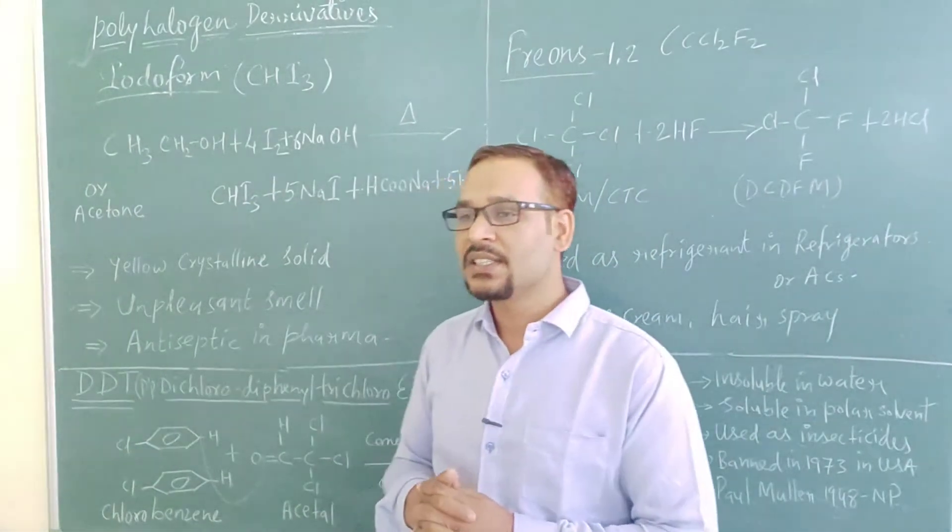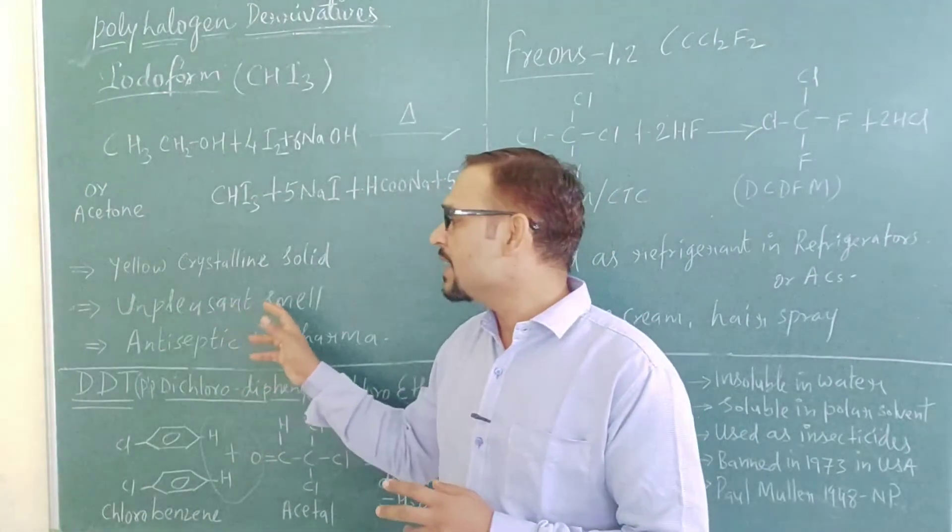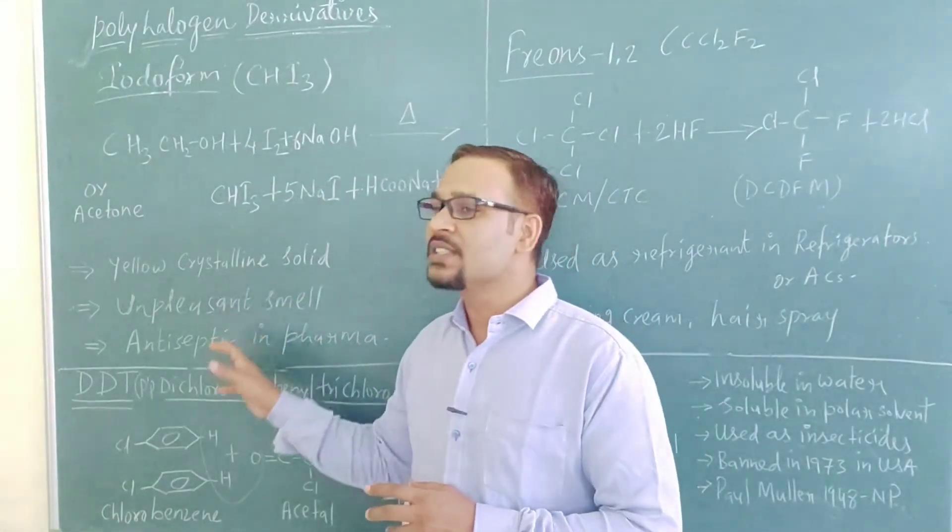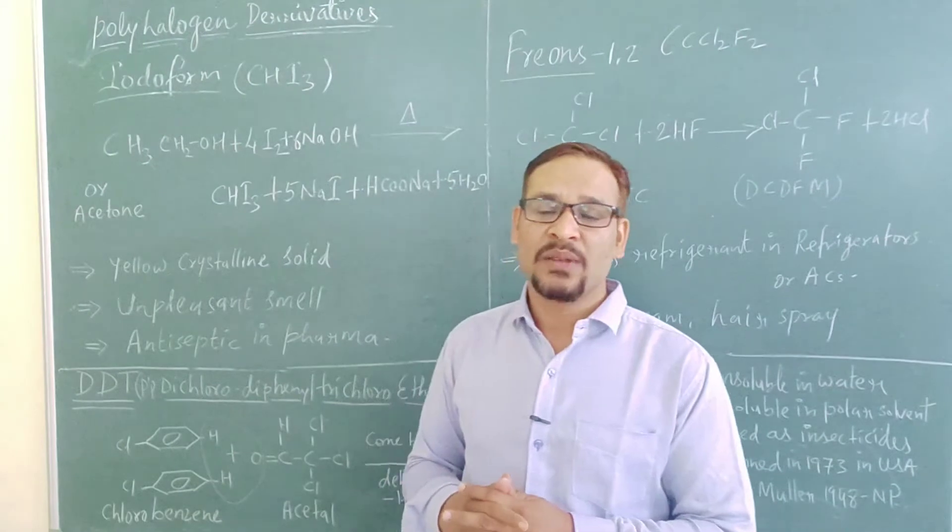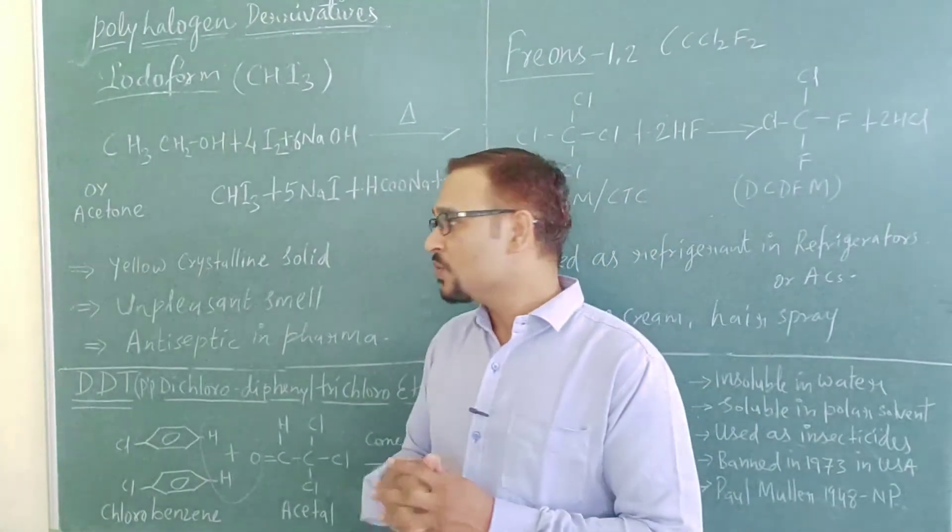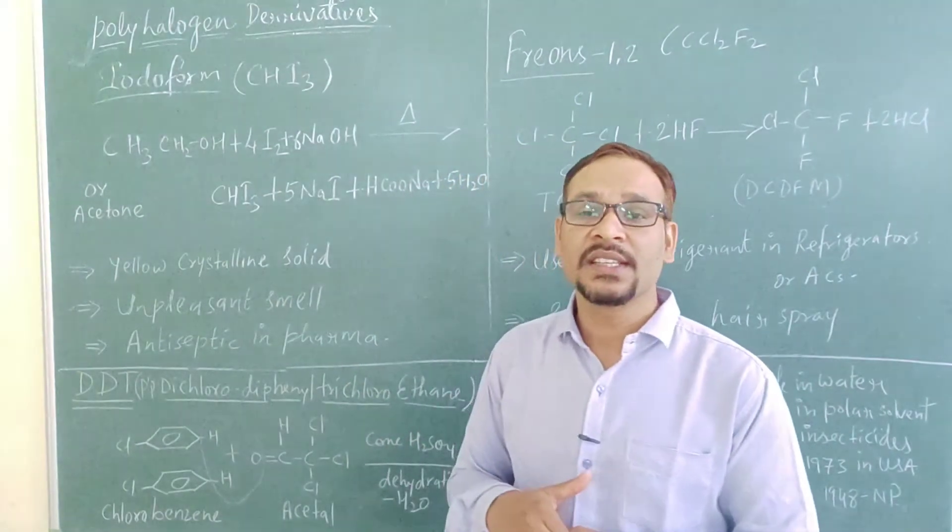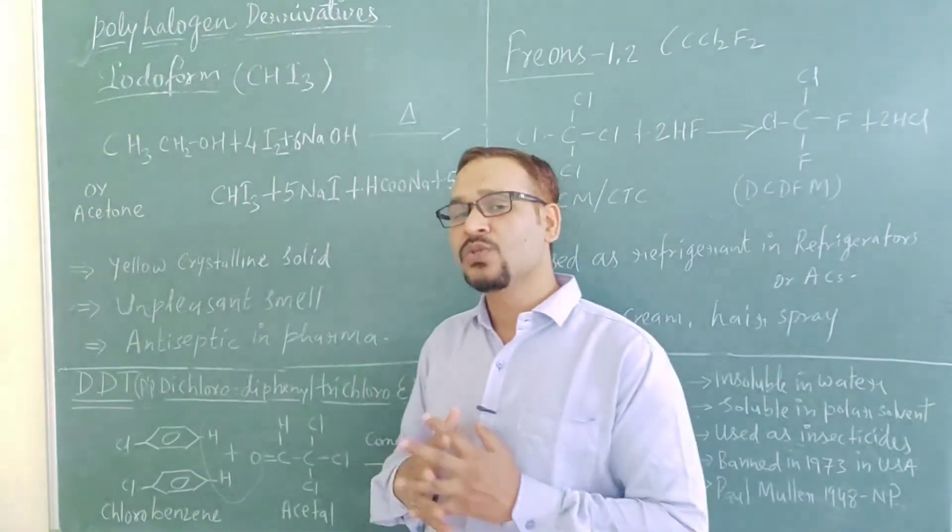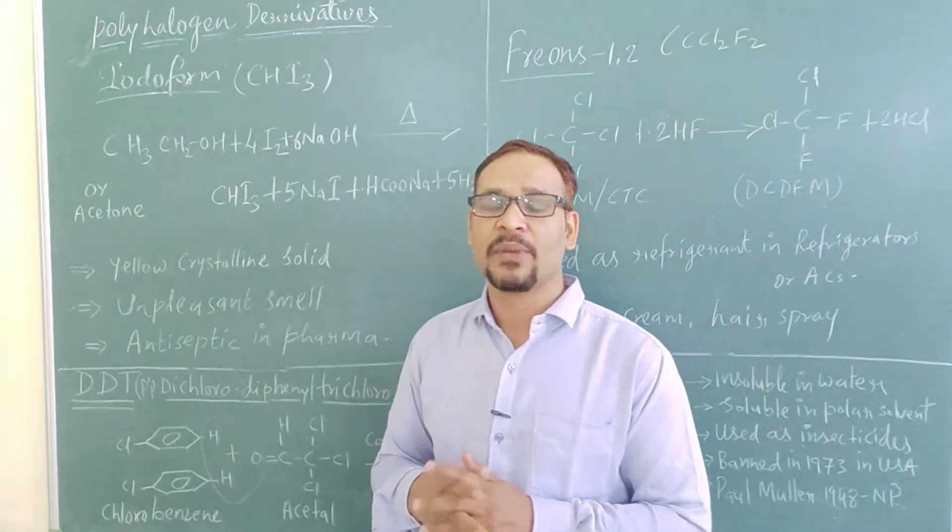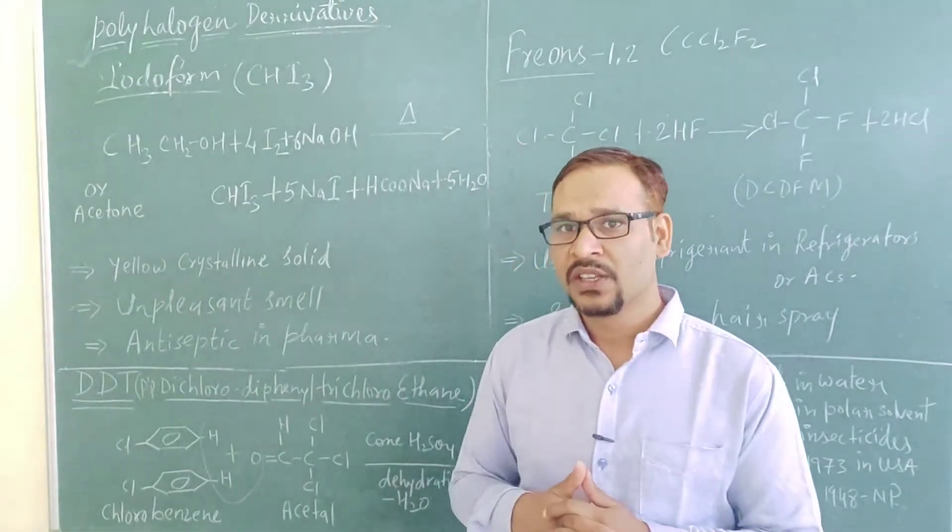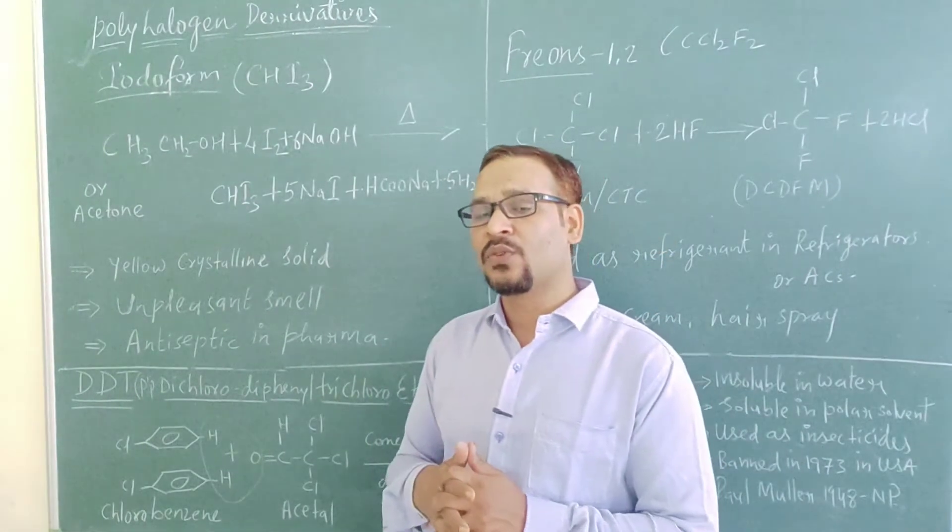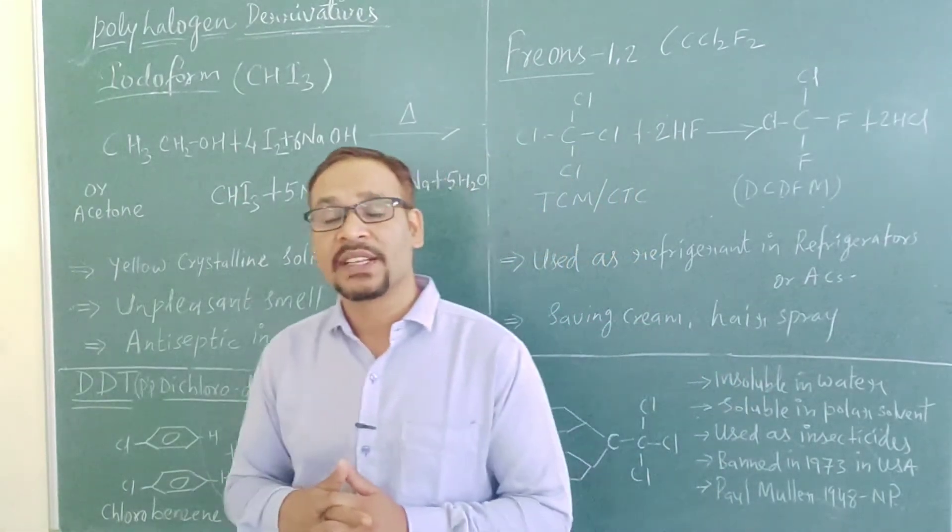What is the property and uses of iodoform? It is yellow colored crystalline solid with unpleasant smell. It has a very bad odor. It is also used as an antiseptic in medicine and pharma industry.